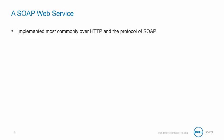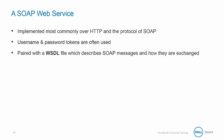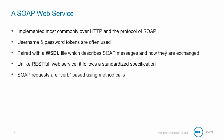A SOAP web service is most commonly implemented over HTTP and the protocol of SOAP. Username and password tokens are most often used, and it's paired with a WSDL — a file that describes SOAP messages and how they are exchanged. Unlike a RESTful web service, SOAP follows a standard specification, and its requests are verb-based using method calls.